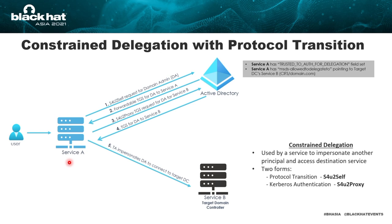S4U2Self is used for protocol transition. It allows a service to receive a forwardable TGS for any user principal without needing delegated credential tokens. Without having a delegated credential token, Service A can use S4U2Self to request a forwardable TGS for any user principal. Once this is done, S4U2Proxy is used to take that forwardable TGS and request another TGS to the target service — which could be the database service, or it could be a domain controller if an attacker wants to use this for covert access.